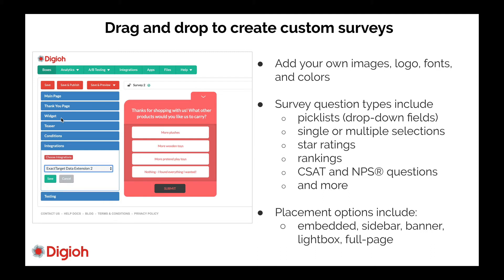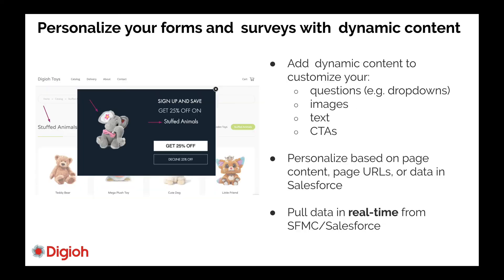You can do a sidebar — something that swings in from the side — a banner positioned at the top above your nav or at the bottom. You can also do a full-screen interstitial. If you want to be really aggressive and make sure you get those survey responses, you can actually take over the entire website with a full-screen takeover.